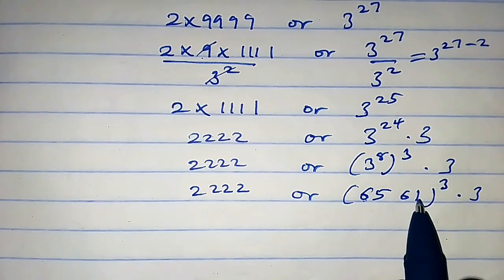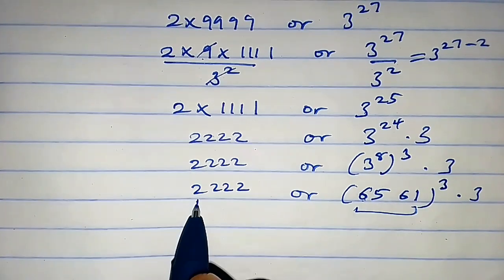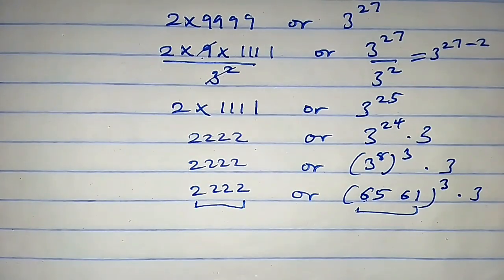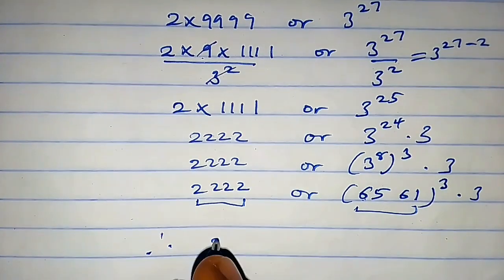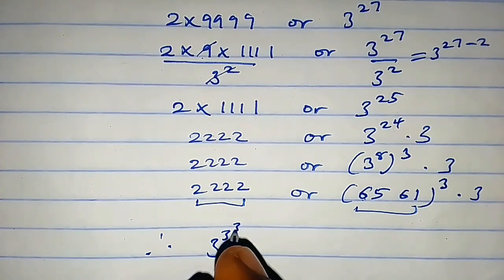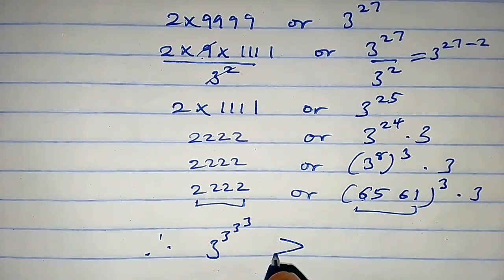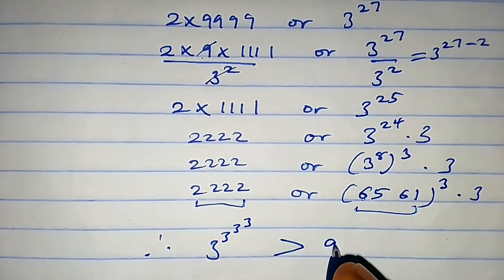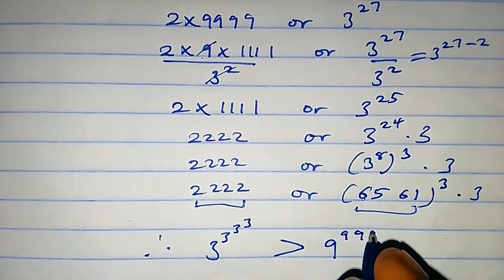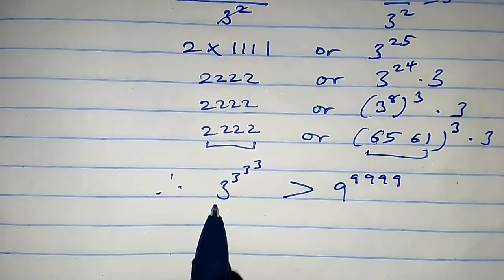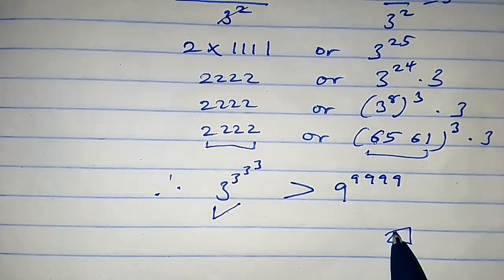6561 is greater than 2^2^2^2^2^2, so that means 3^3^3^3^3 is greater than 9^9^9^9^9. So 3^3^3^3^3 is the larger number. That is it — thanks for watching, peace.